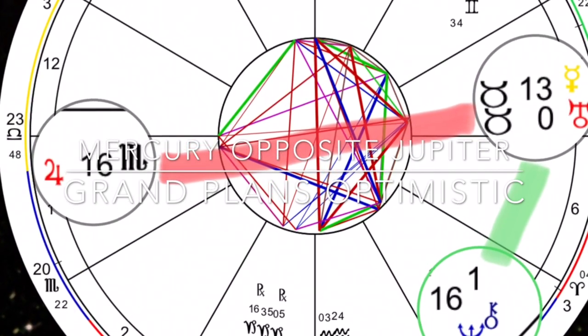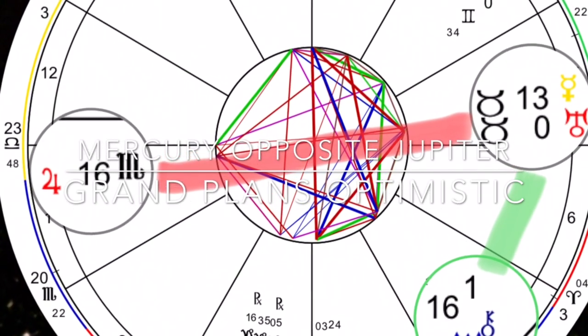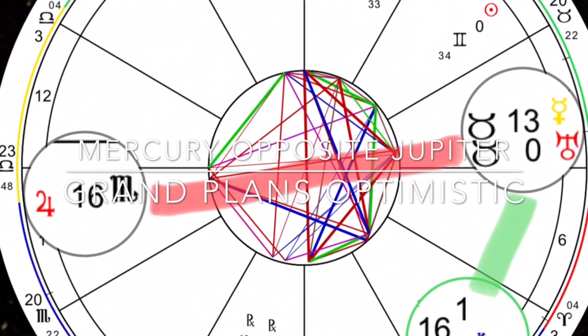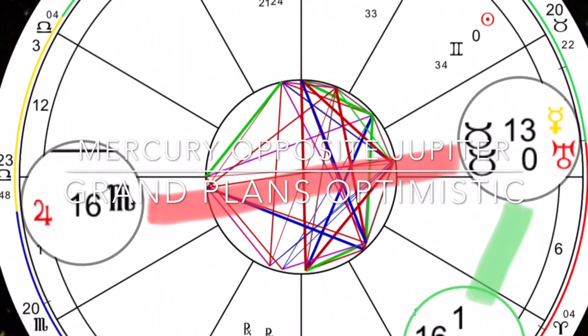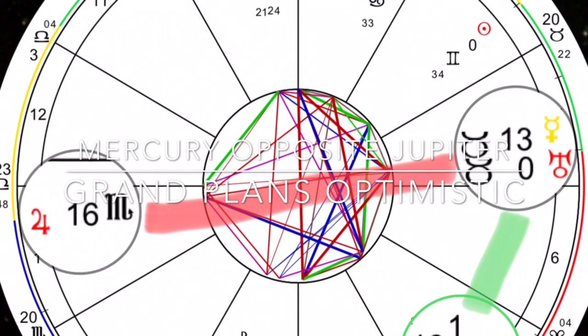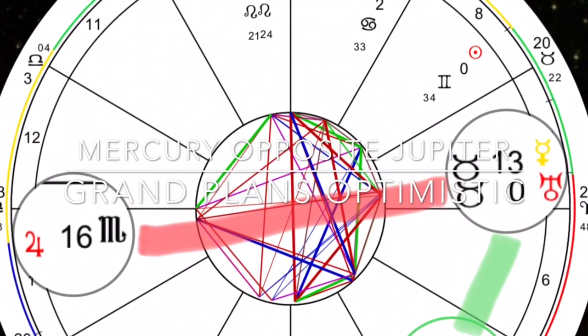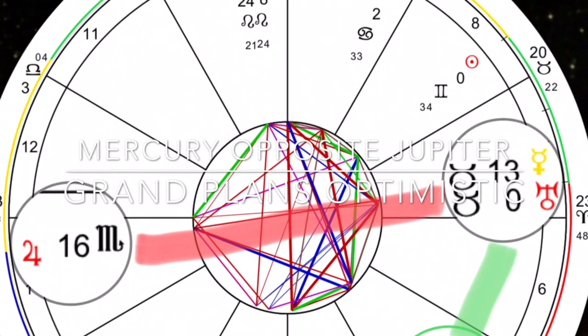Cancer, Scorpio, Pisces, specially born between 7th to 9th of July, 7th to 9th of November, and 7th to 9th of March, this is your trine. If you have any personal planets between 15 to 17 degrees of Cancer, Pisces, and Scorpio, this is going to affect you and benefit you the most.